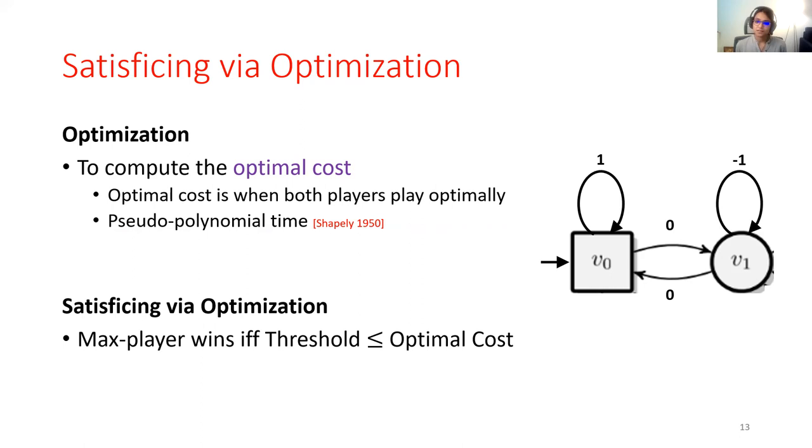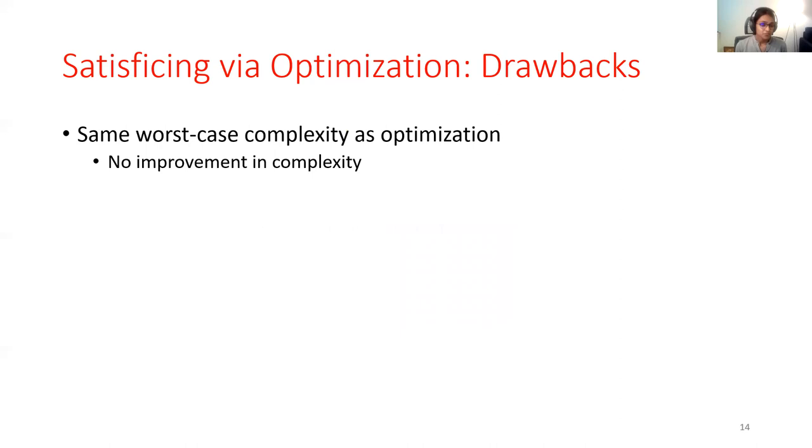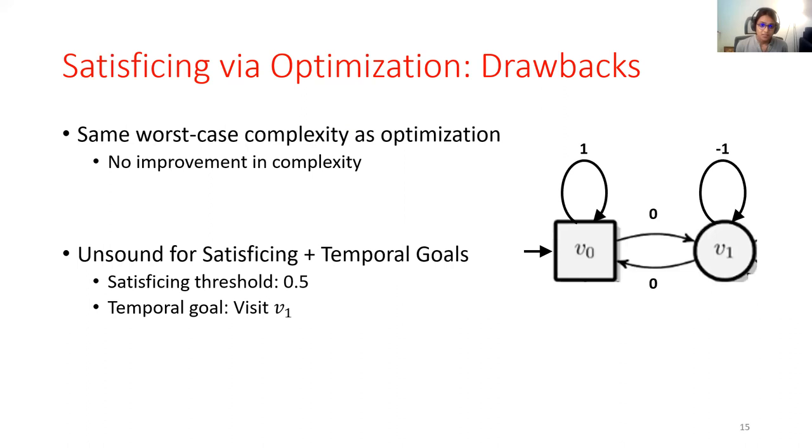The issue with this algorithm is that it exposes none of the benefits of satisficing. First of all, this algorithm has the same worst-case complexity as optimization. There is no reduction in complexity. And second, when satisficing goals are combined with temporal goals, if satisficing is being solved via optimization, the algorithm could be unsound.